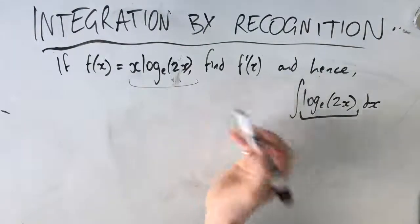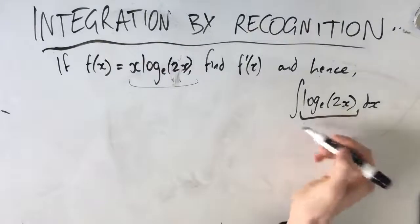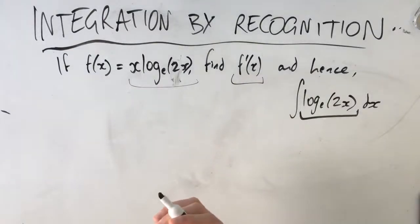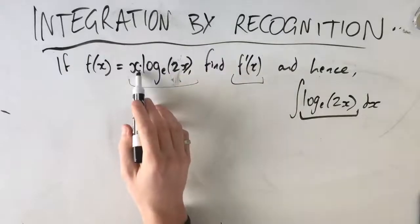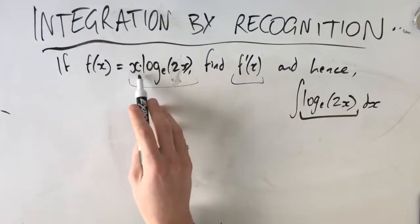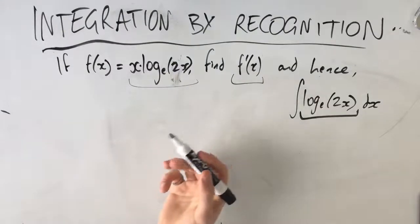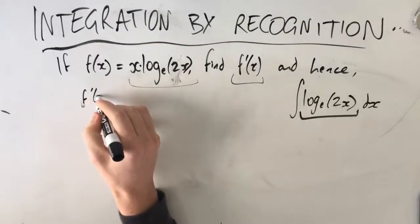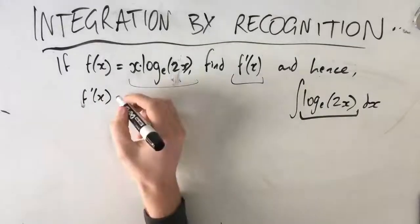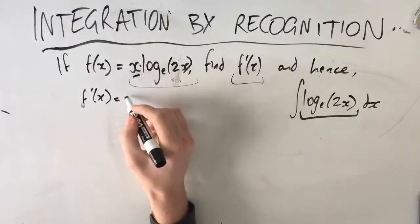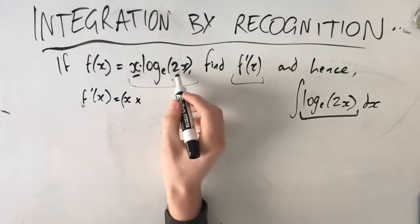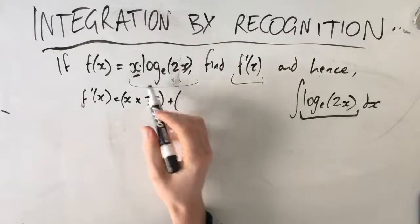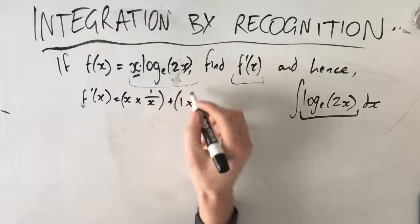Let's start by finding f'(x). I like to break this up into two parts. We can recognize this is a product function — there's a multiplication between x and log_e(2x) — so we deal with this using the product rule. So f'(x) equals x times the derivative of log_e(2x), which is 1/x, plus the derivative of x, which is 1, times log_e(2x).